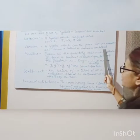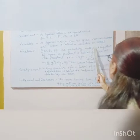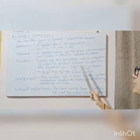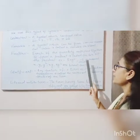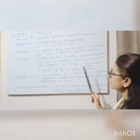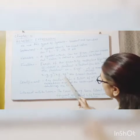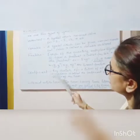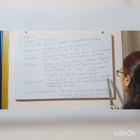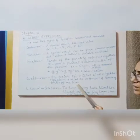Factors: each of the quantity multiplied together to form a product is called factor of the product. Example: 5x square minus 5 numerical factor. X, Y, Y square, X, Y, X, Y square are literal factors. Coefficient: what is coefficient? Coefficient is any factor of a term of an algebraic expression is called the coefficient of remaining factors of the term.